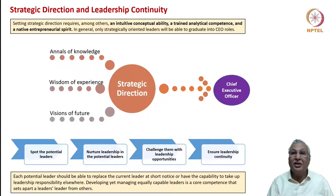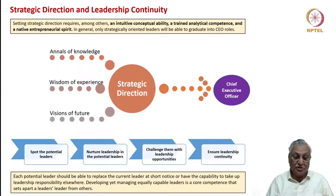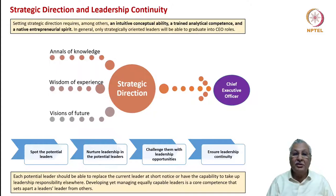Nurturing leadership in potential leaders, challenging them with more leadership opportunities, and ensuring leadership continuity are critical responsibilities of the CEO. In an evolved organization, a leader should be capable of getting replaced at short notice if required. Developing leadership is a co-competence that distinguishes a leader's leader — an apex leader — from other leaders. That is the difference between a leader and a leader's leader.